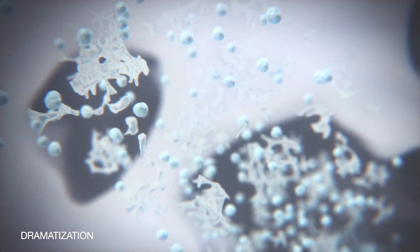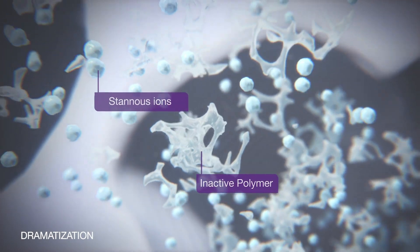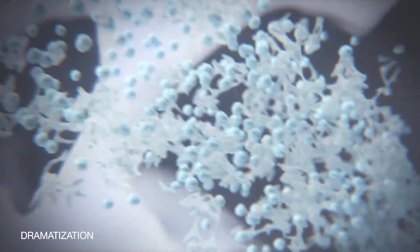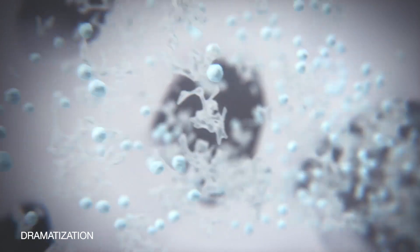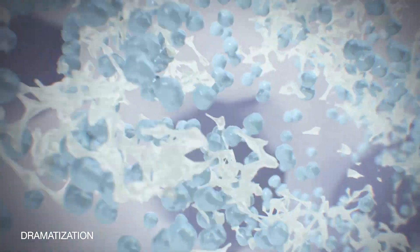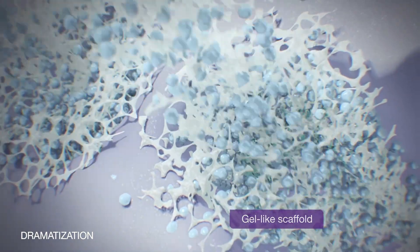Sensodyne Rapid Relief contains a stannous fluoride and inactive polymer to provide fast occlusion of dentin tubules. The inactive polymer aids this process through improved bioadhesion, forming a gel-like scaffold which is thought to hold the stannous ion in place to accelerate occlusion.